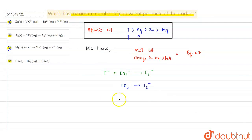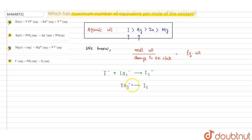We find the oxidation state of iodine in IO₃⁻. Let x be the oxidation state of iodine. Then x + (−2) × 3 = −1, which gives x − 6 = −1, so x = +5. The oxidation state of iodine in IO₃⁻ is +5.